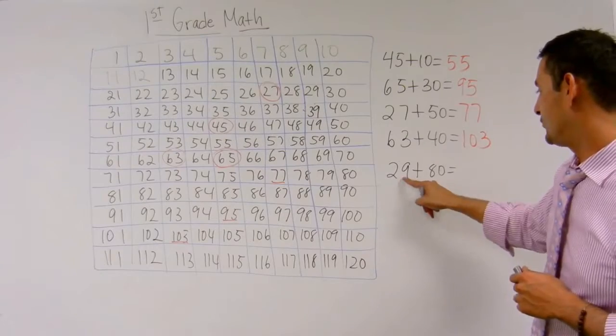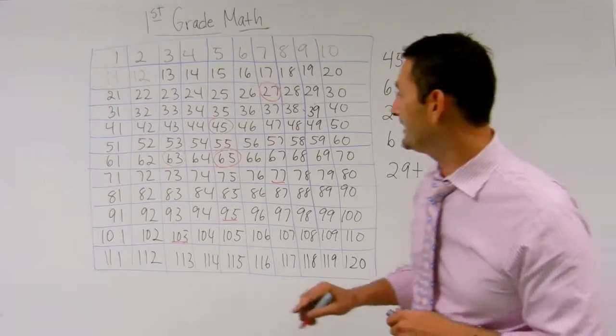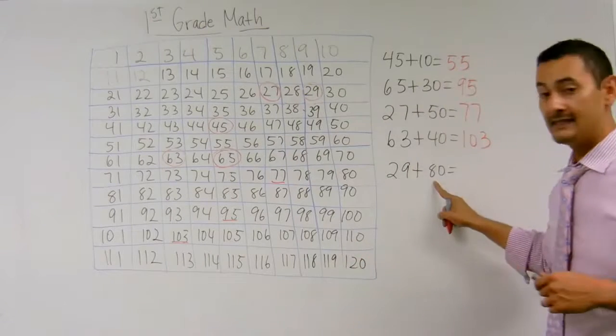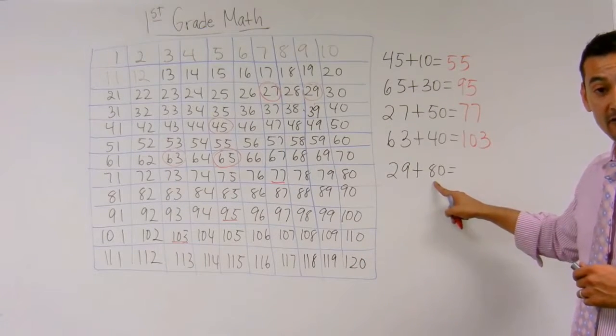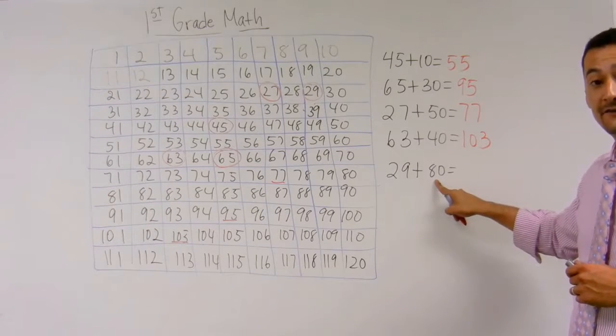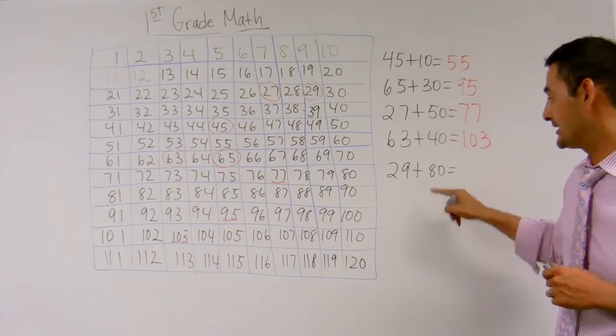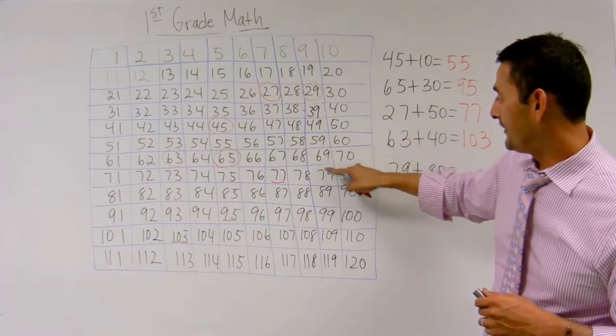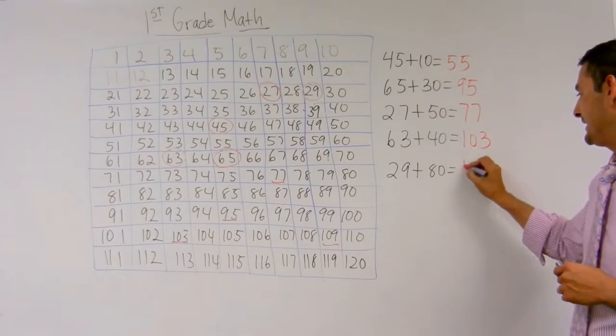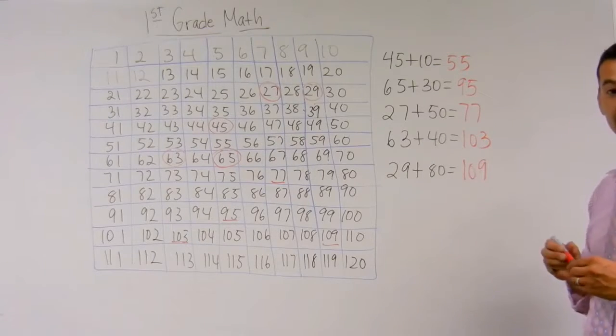Now let's look at this one, 29 plus 80. Let's find 29 on the number line. 29 plus 80. We're going to move down 8 spaces: 10, 20, 30, 40, 50, 60, 70, 80. And 29 plus 80 is 109.